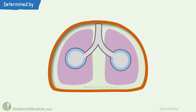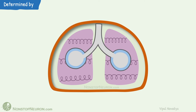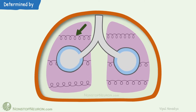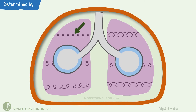Now let's see what determines lung compliance. It is determined mainly by two elastic forces: the elastic forces of lung tissues, and the elastic force caused by surface tension of fluid that lines the airways. Lungs have elastin and collagen fibers. In the deflated state of lungs, these fibers are kinked. As the lungs expand, these fibers get stretched and exert elastic force on the lungs.